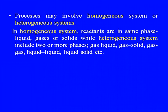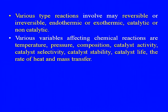In a homogeneous system, reactants are in the same phase — liquid, gas, or solid — while heterogeneous systems include two or more phases: gas-liquid, gas-solid, gas-gas, liquid-liquid, liquid-solid, etc. Various types of reactions involved include reversible or irreversible, endothermic or exothermic, and catalytic or non-catalytic. The chemical process industry is of a very complex nature.